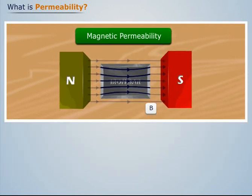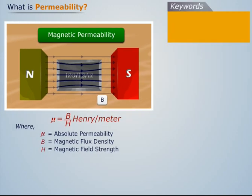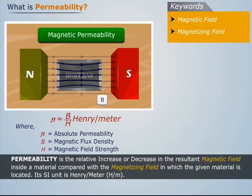Here the permeability of iron can be calculated using the expression where mu is the absolute permeability, B the magnetic flux density, and H the magnetic field strength. Thus, permeability is the relative increase or decrease in the resultant magnetic field inside a material compared with the magnetizing field in which the given material is located. Its SI unit is henry per meter.